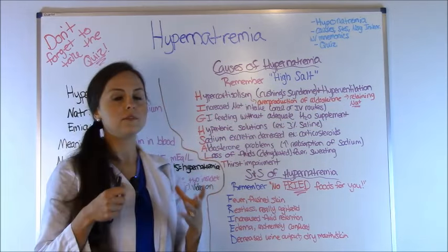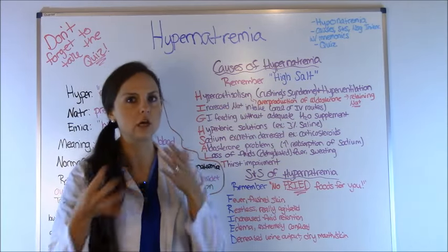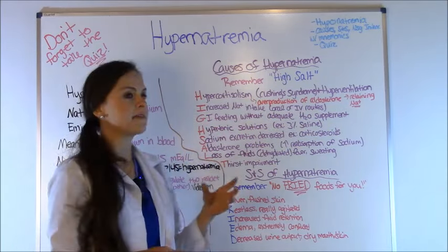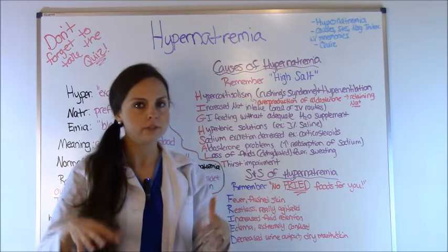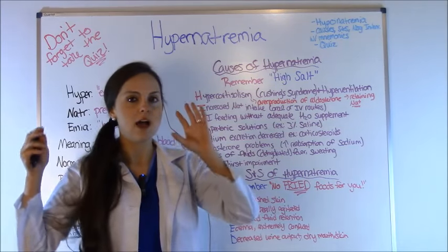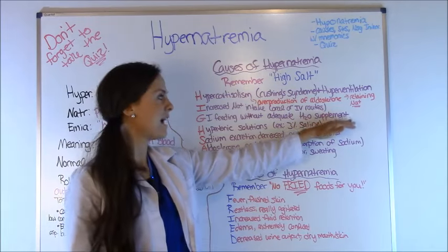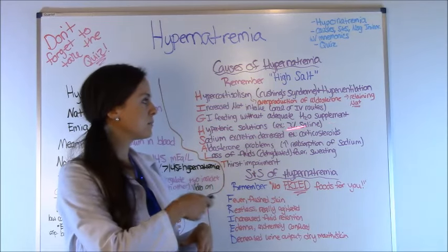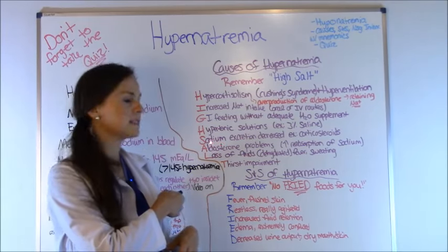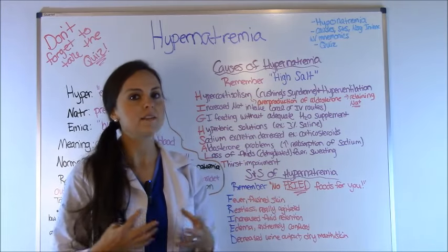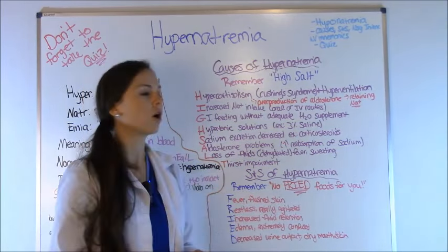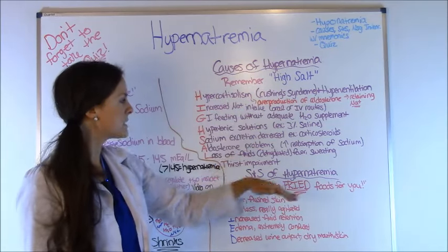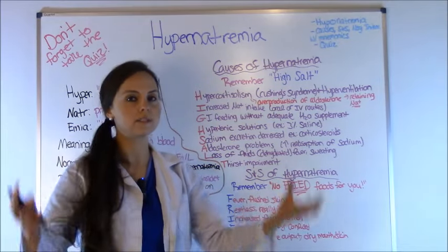Continuing with HIGH SALT: S is for sodium excretion decrease, where the body retains sodium and doesn't get rid of it — corticosteroids are drugs that cause this. A is for aldosterone problems, which again links back to hypercortisolism and Cushing's, where increased reabsorption of sodium occurs. L is for loss of fluids, where the patient becomes dehydrated through fever or sweating.